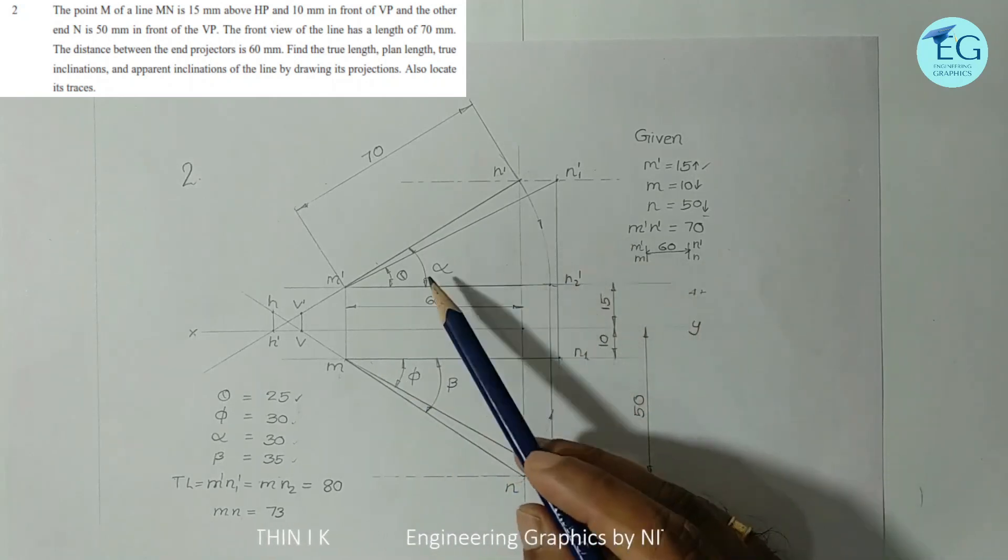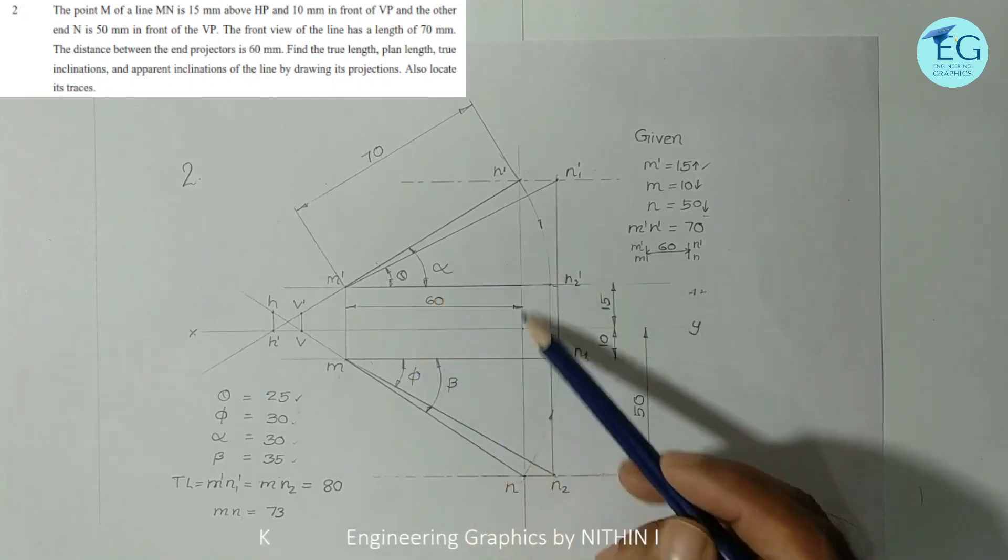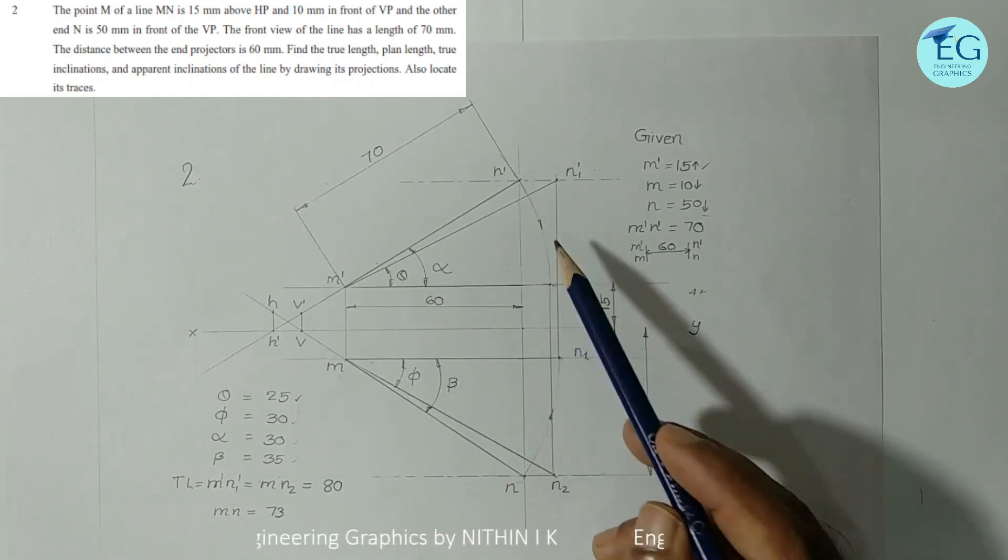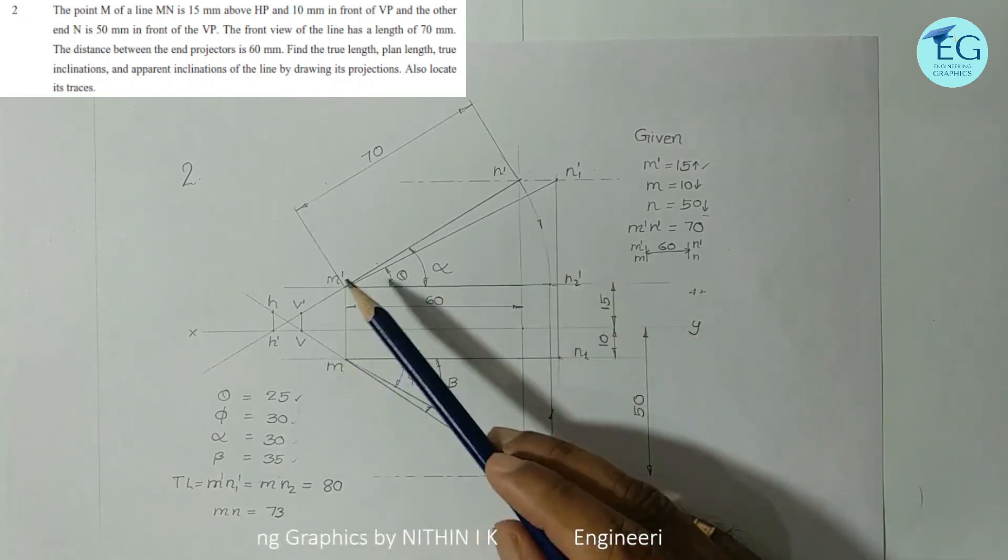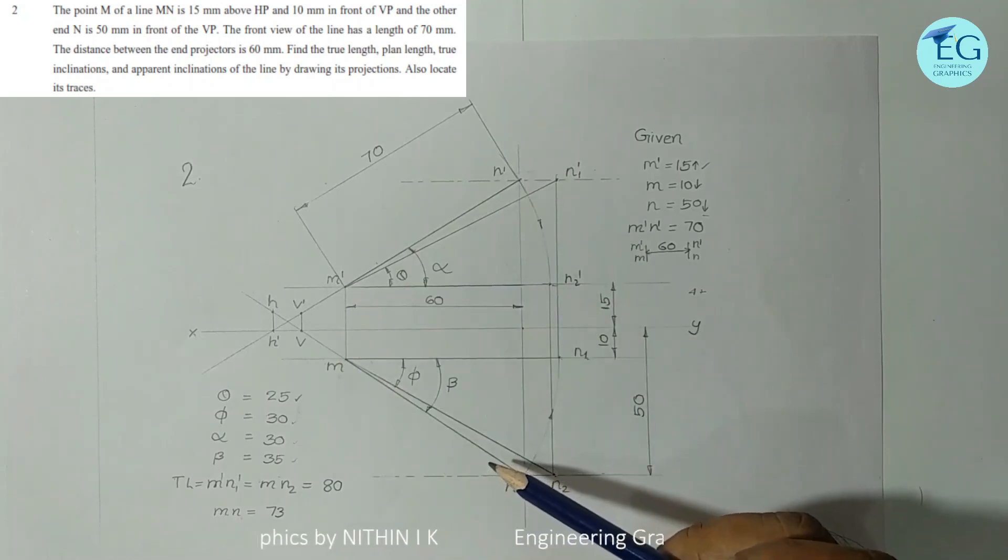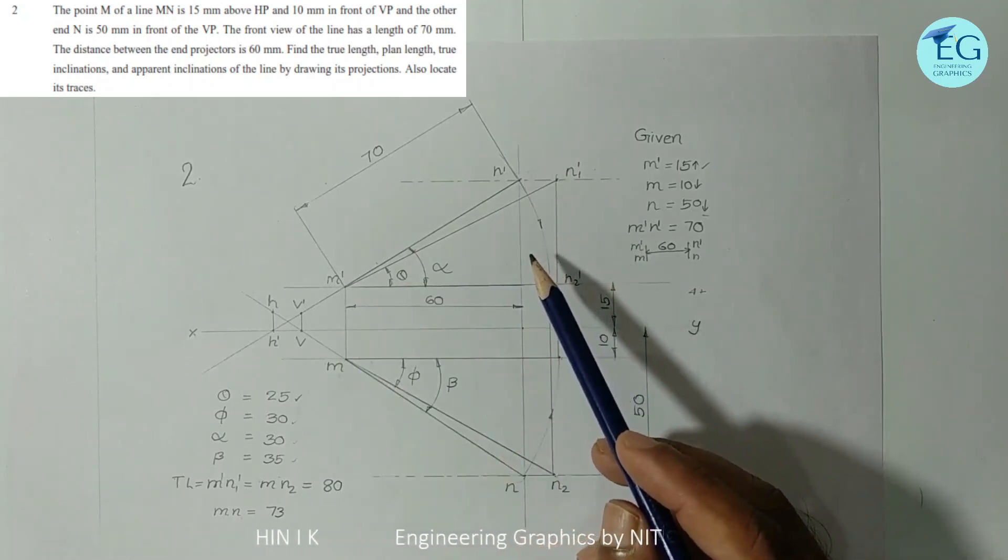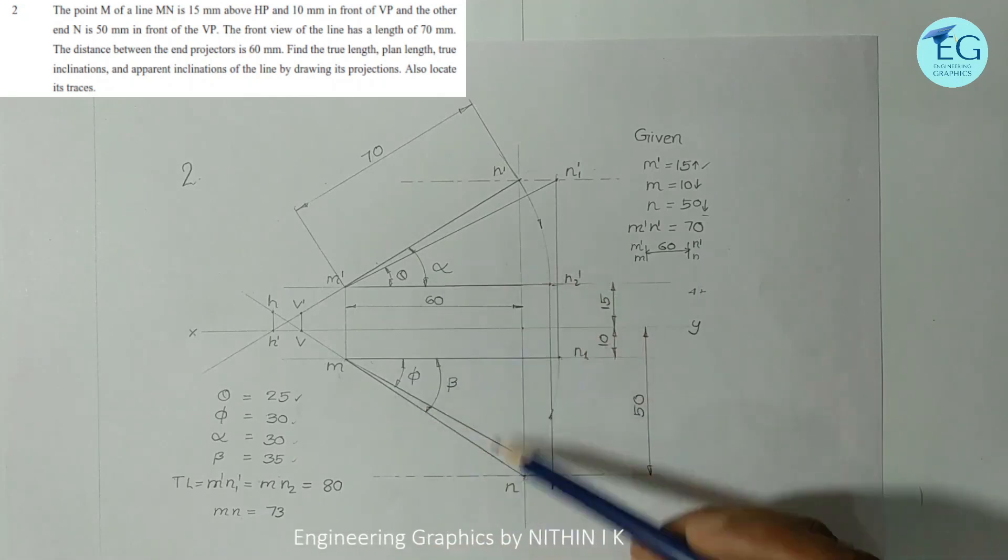Points located 4 to 5 marks. Then distance between end projectors 60 mm line, that is 2 to 3 marks. Next, m dash n dash m n complete 4 to 5 marks. Here we have 12 to 13 marks.